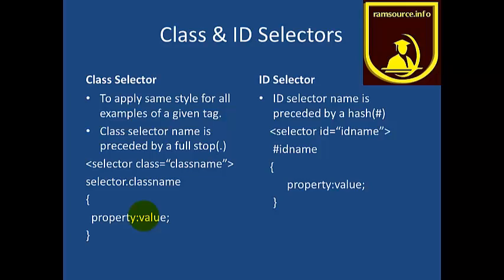For the ID selector, it is similar. For each individual element, each individual selector has an ID. We can save the ID name and access it using a hash symbol followed by the ID name, then the property name. That particular style will apply to that particular selector.